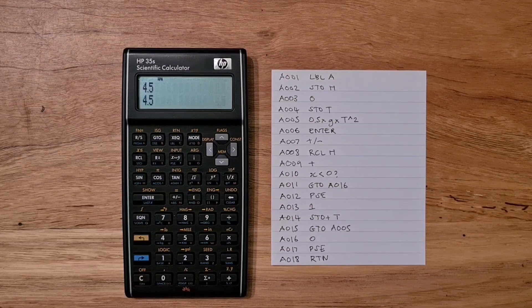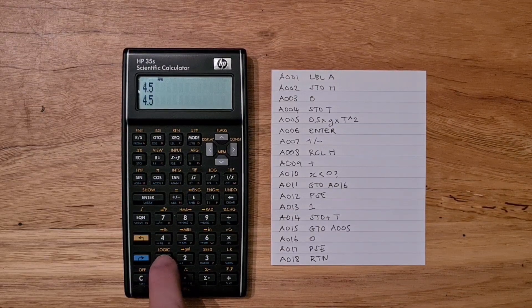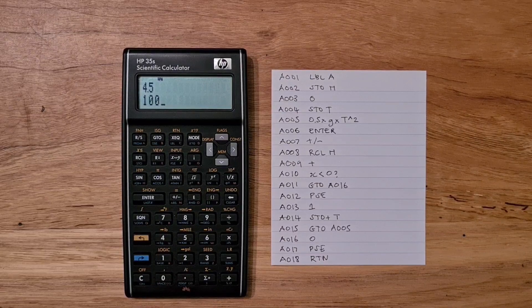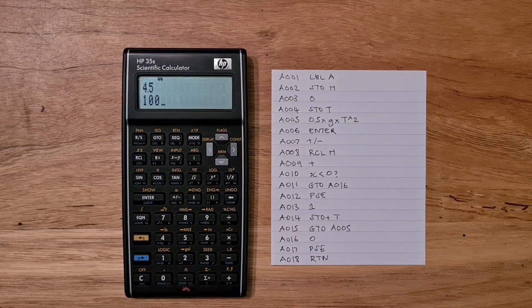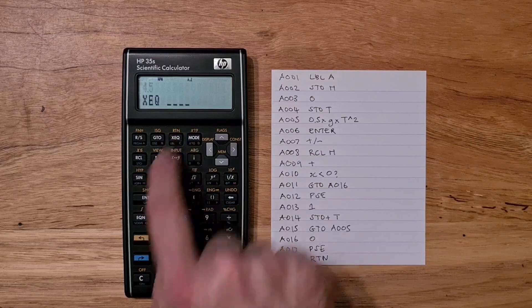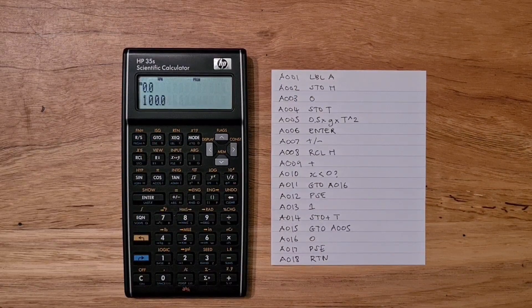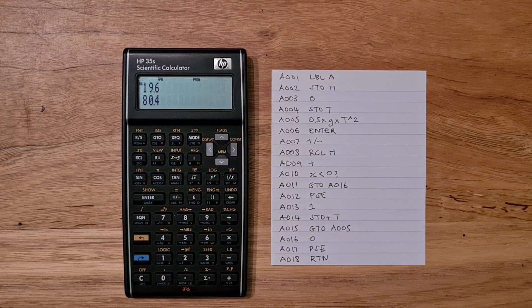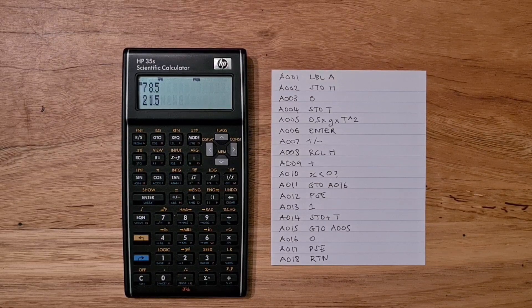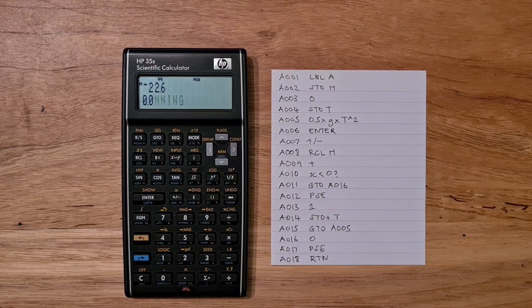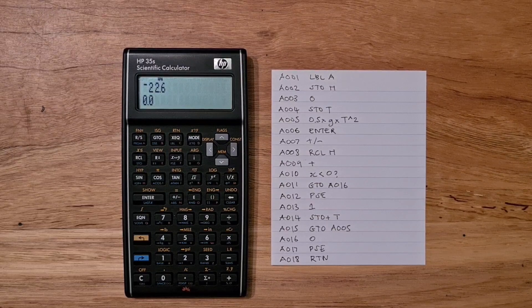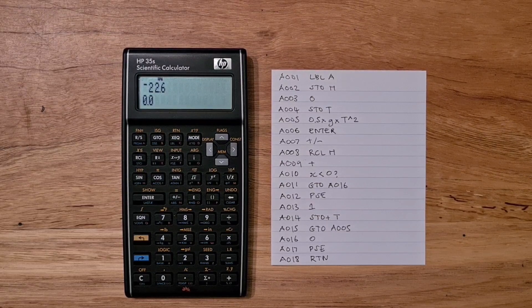If I enter 100 as my height, I can run my program, which is stored in A, and it will loop through and show me the height of the object after each second until it gets to zero.